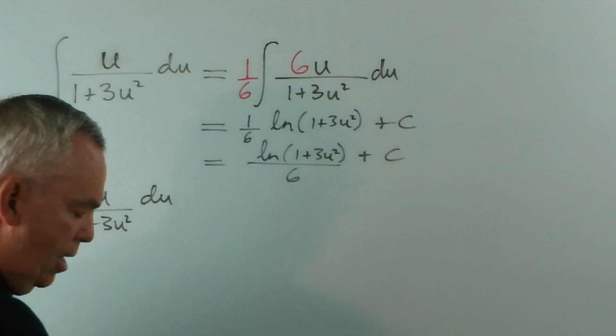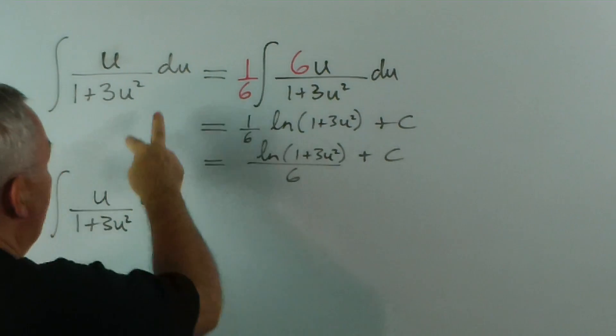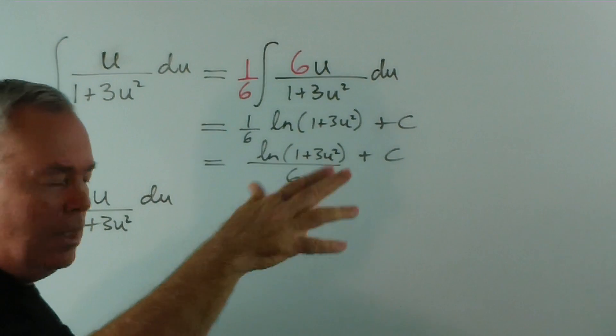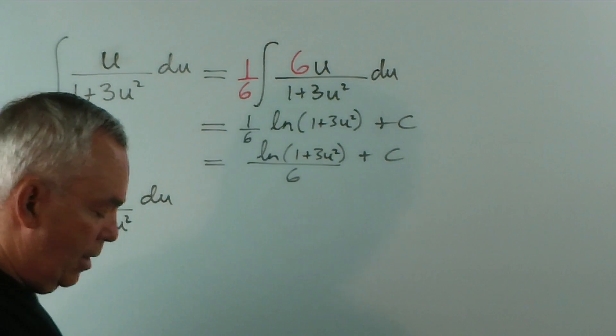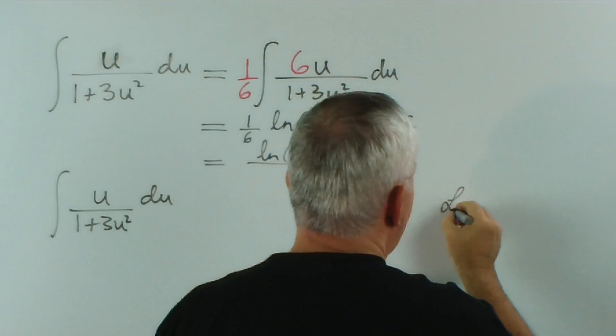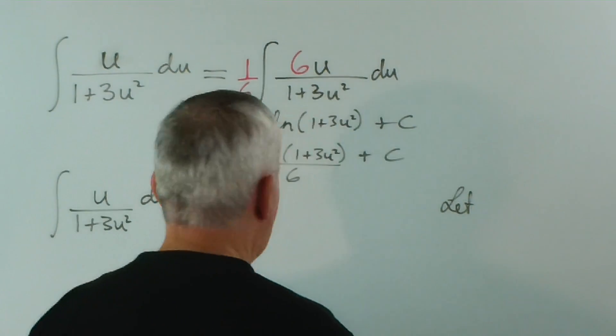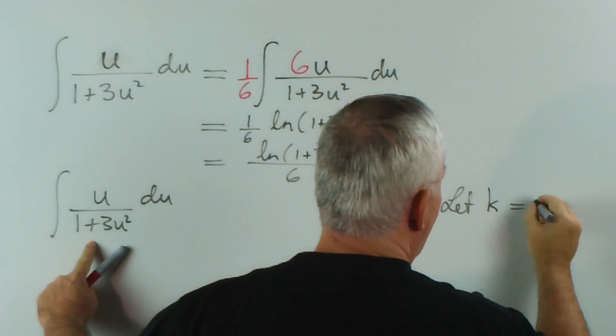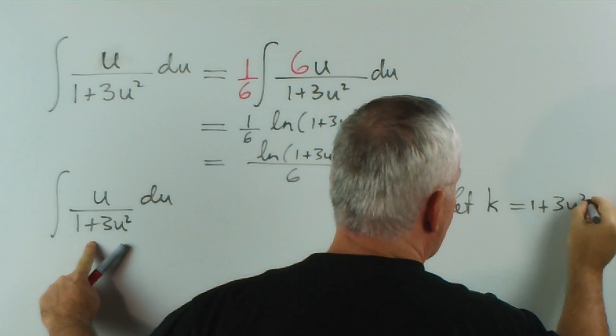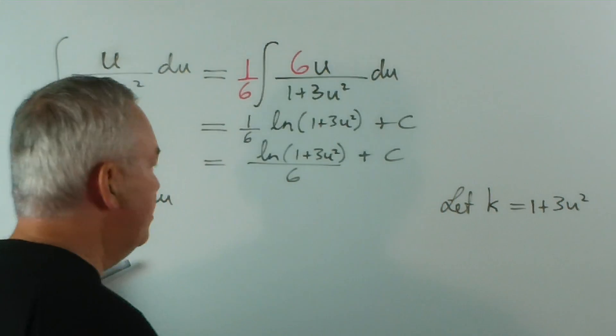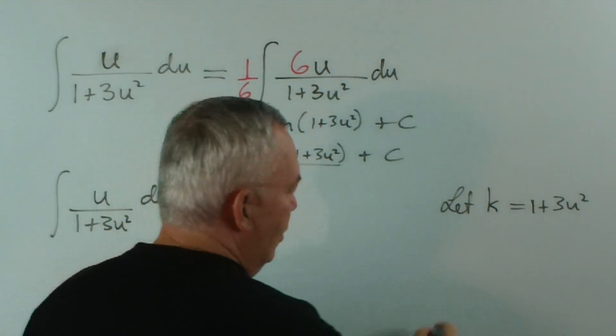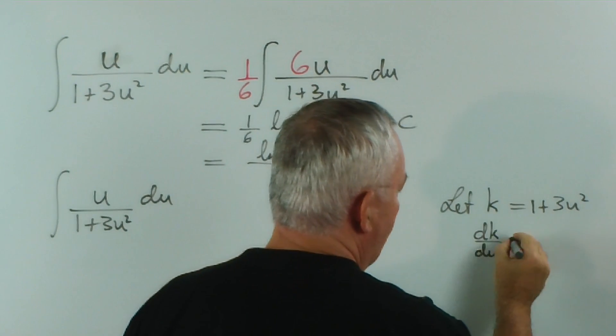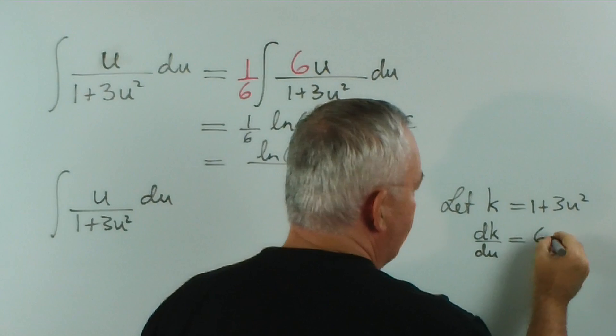So, we would have done this... 1 plus 3u squared. Now, I was a bit cheeky. I deliberately made the variable u because we often use u as a substitution, let u equal. Here we're going to have to let some other letter equal something. So, let k equal 1 plus 3u squared. What do we get? dk du is 6u.